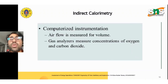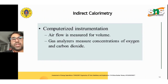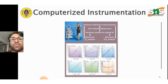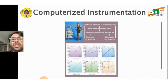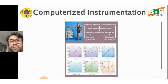Computerized instrumentation is also available, in which airflow is measured for volume and gas analyzers measure the concentration of oxygen and carbon dioxide. Graphs are drawn from the data. An electronic interface connects to the computer from the flow meter, breathing valve, and sampling chamber for expired air. Electronic O2 and CO2 analyzers are in turn connected to the electronic interface of the computer.